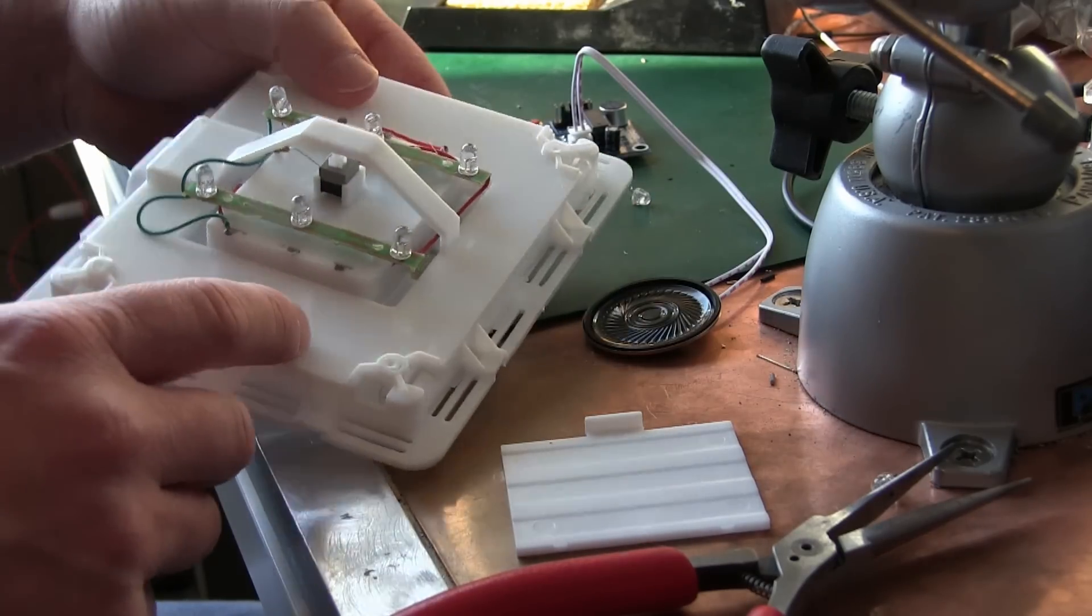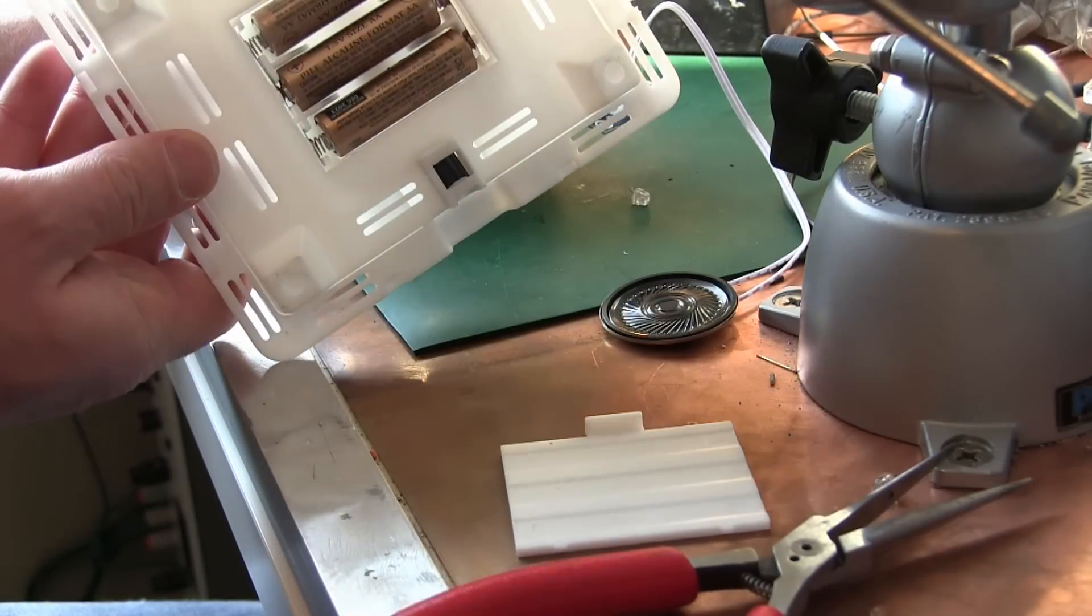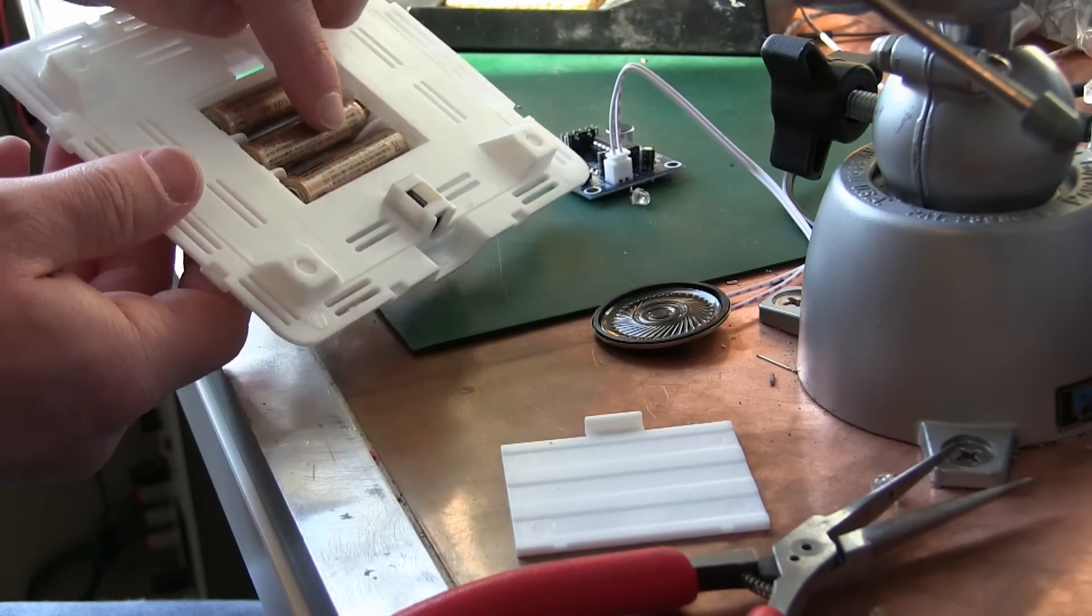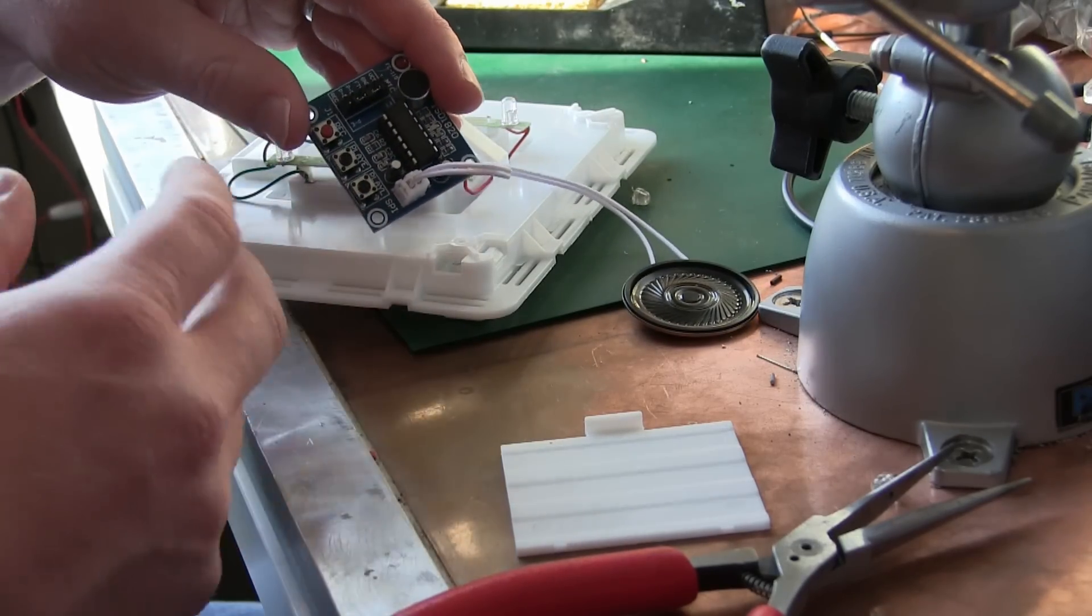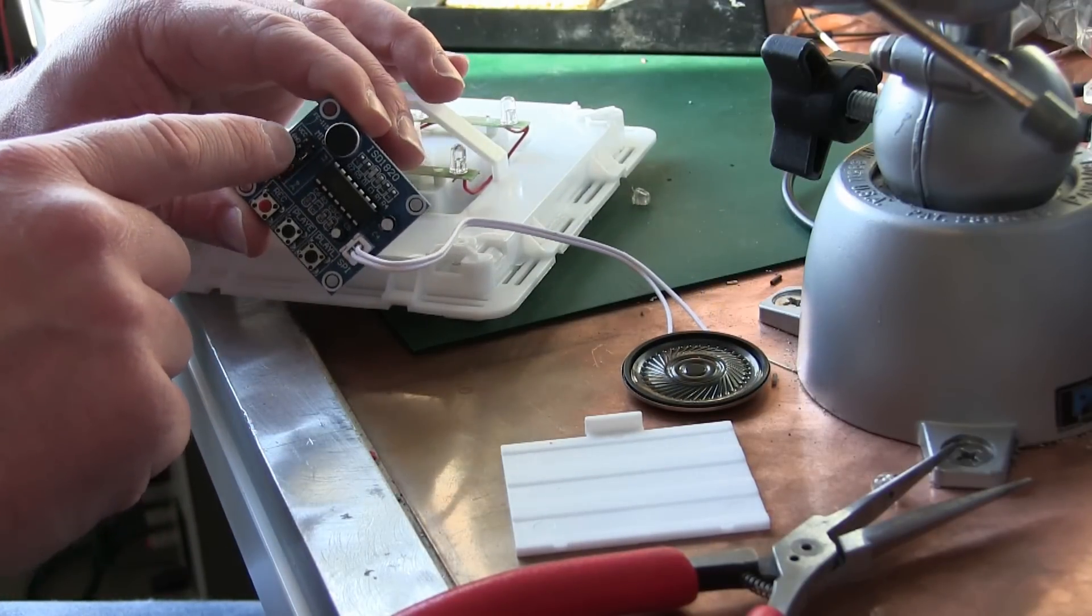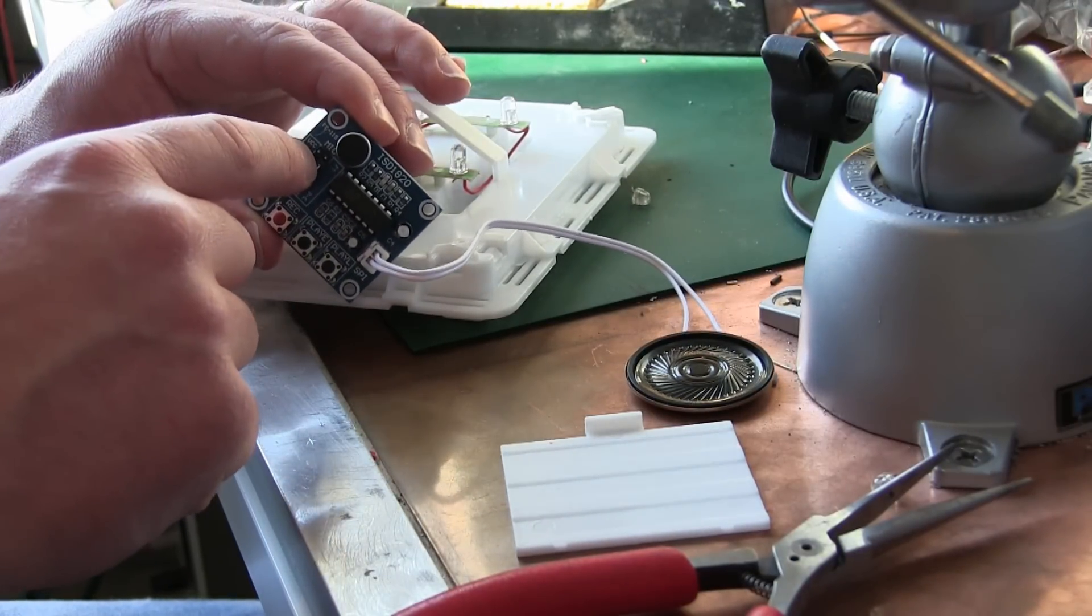Now what we got to do is get power into here. These are 1.5 volt cells and they're in series. That means 1.5, 3, 4.5. This runs on, as I said, 3 to 5 volts. Perfect. So we take the VCC pin here, which is power in, and the GND, ground, which is power out.